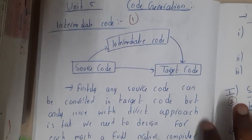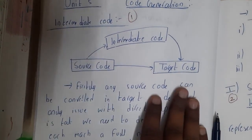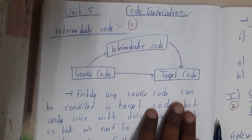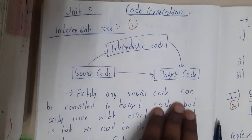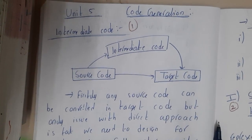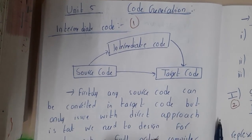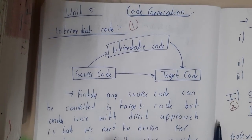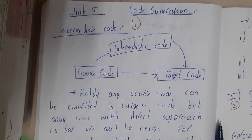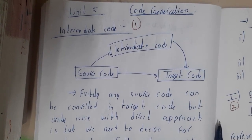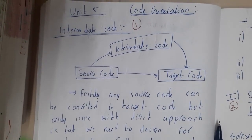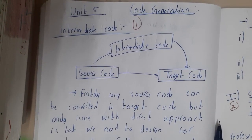I hope everyone got a clear idea on the concept of parameter passing. In the next lecture, we'll be starting the next unit, discussing intermediate codes, code generation, code optimization, and related topics. So we'll start with intermediate code in the next lecture — thank you, thanks for watching.